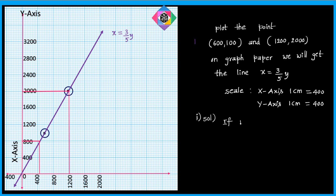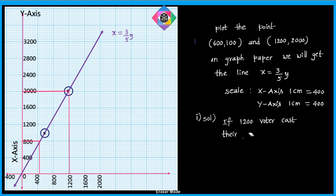If 1200 voters cast their vote, then the total number of voters is equal to 2000. That is the second question answered.